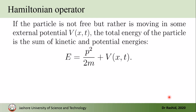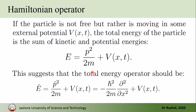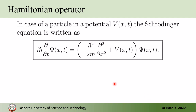Here we considered only the kinetic energy, so Ê = T̂. But if we have a particle moving in a potential V(x, t), then the energy would be kinetic energy plus the potential. In that case we write the energy operator as −(ℏ²/2m)(d²/dx²) + V, and we have the Schrödinger equation for a particle in a potential V.